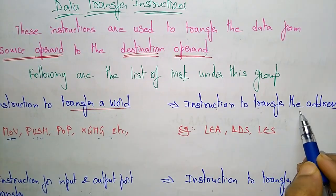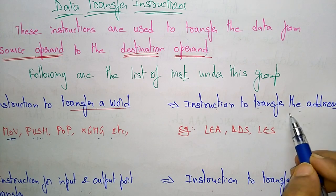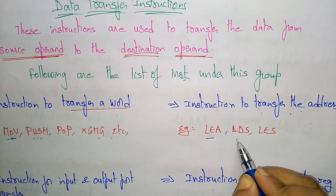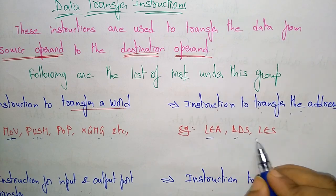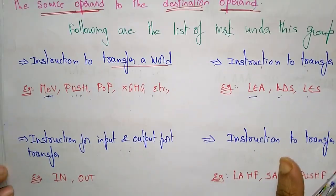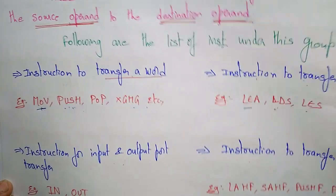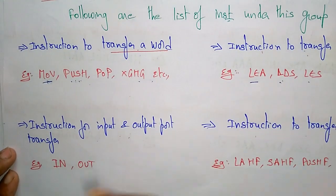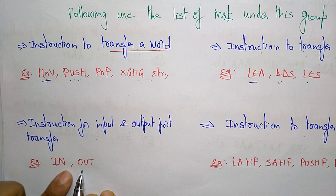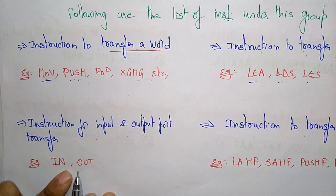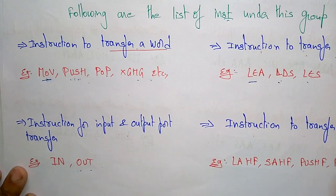To transfer an address, you use Load Effective Address (LEA), Load DS, and Load ES. For input and output ports: if you want to take data from an input device to the processor, you use the IN instruction. If you want to transfer data from the processor to output devices, you use the OUT instruction.